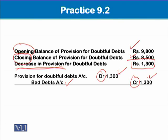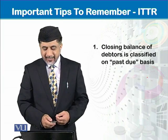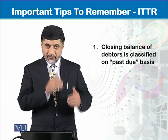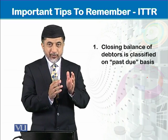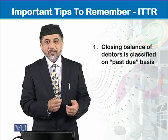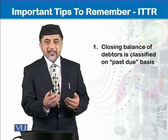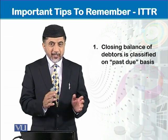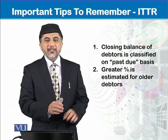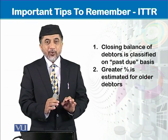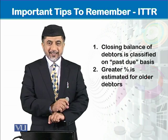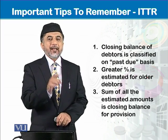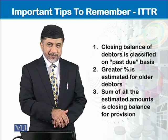The key takeaways from this module are: the closing balance of debtors is classified on a past-due basis — less than 30 days, 30 to 60 days, 60 to 90 days, and more than 90 days. A greater percentage is estimated for older debtors, and the sum of all estimated amounts is the closing balance of the provision for doubtful debt. Remember these steps.